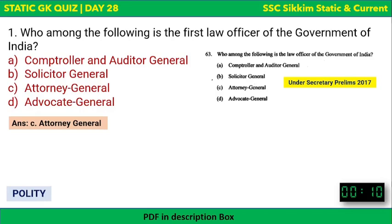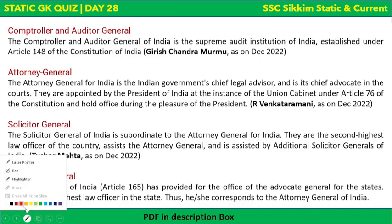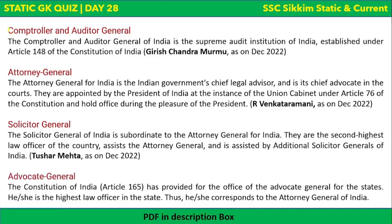The options include CAG, solicitor general, attorney general, and advocate general. The full form of CAG is Controller and Auditor General. The Controller and Auditor General of India is the supreme audit institution of India — so if someone asks which is the supreme audit institution, the answer is CAG. It was established under Article 148 of the Constitution.